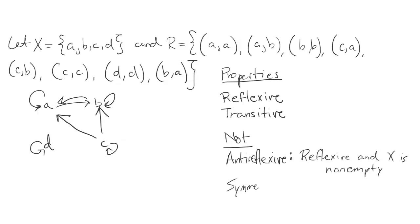It's not symmetric because of the pair (c,a), right? We don't have (a,c). And it's not anti-symmetric because we have both (a,b) and (b,a), even though B and A are not the same. So here's a relation that is reflexive and transitive, but not anti-reflexive, symmetric, or anti-symmetric.